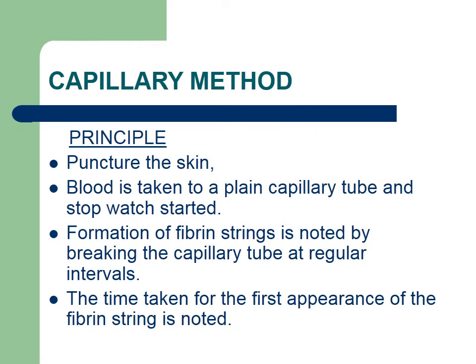Let's discuss the capillary tube method. The principle is: first, puncture the skin and draw blood into a plain capillary tube. The tube should be held horizontally, then start the stopwatch. Note the formation of fibrin strings by breaking the capillary tube at regular intervals. The time taken for the first appearance of a fibrin string is noted — that is the clotting time.